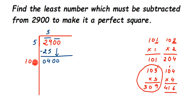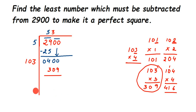We settle on 3, so the divisor becomes 103 and we multiply 103 × 3 = 309. We write 3 in the quotient, giving us 53 so far. Subtracting 309 from 400 gives us remainder 91. We cannot proceed further because doubling the quotient 53 would give 106, which is already greater than 91, so we stop here.